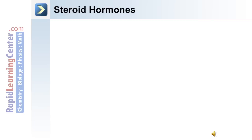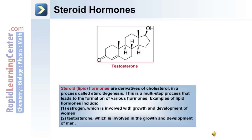The third major group of hormones are steroid hormones. These hormones are derivatives of cholesterol and they are made in the process called steroidogenesis. This multi-step process leads to the formation of various hormones. Examples of this class include estrogen, which is involved with the growth and development of females, and testosterone, which is involved in the growth and development of males.